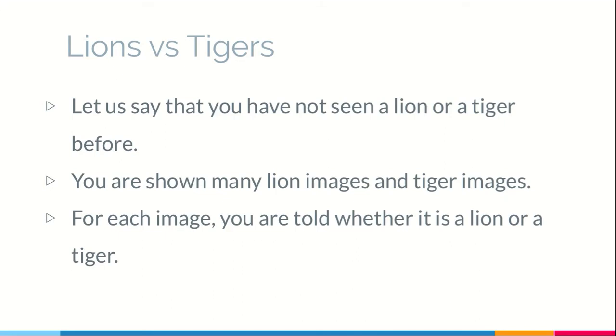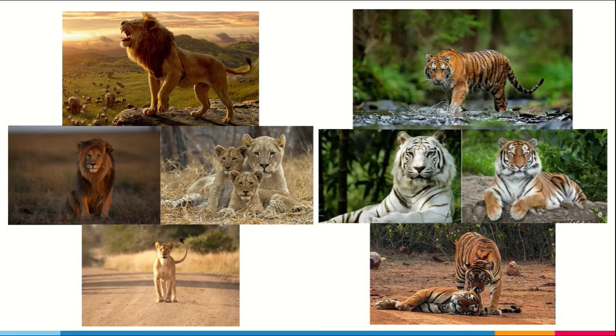Let us say that you have not seen a lion or a tiger before. Now you are shown many lion images and tiger images and for each of them you are told whether it is a lion or a tiger image. Now when you see a new image you will go back to all the images that you have seen and you will try comparing these with those and see which one it is closest to or which few images it is closest to. Based on that you will decide whether it is a lion or a tiger.